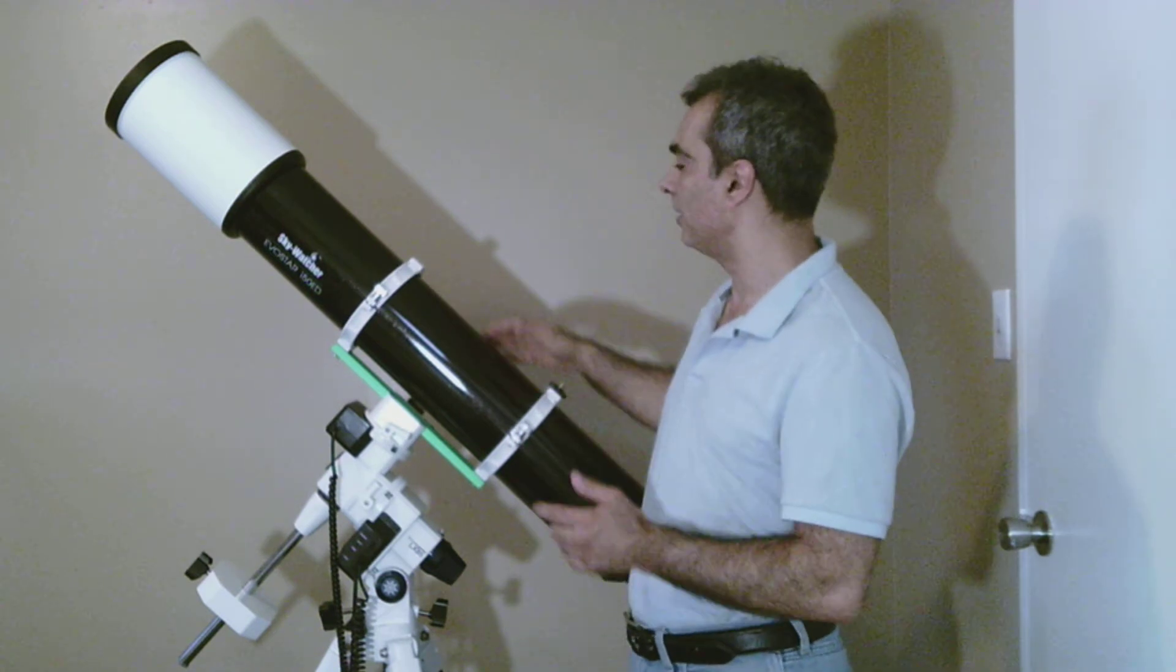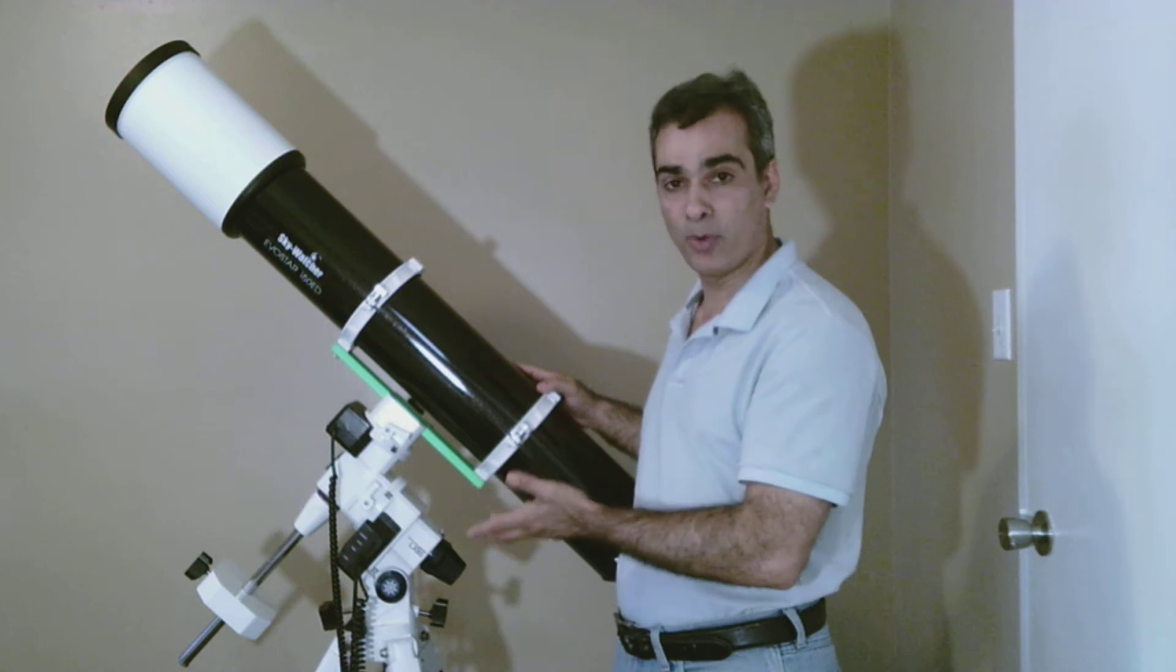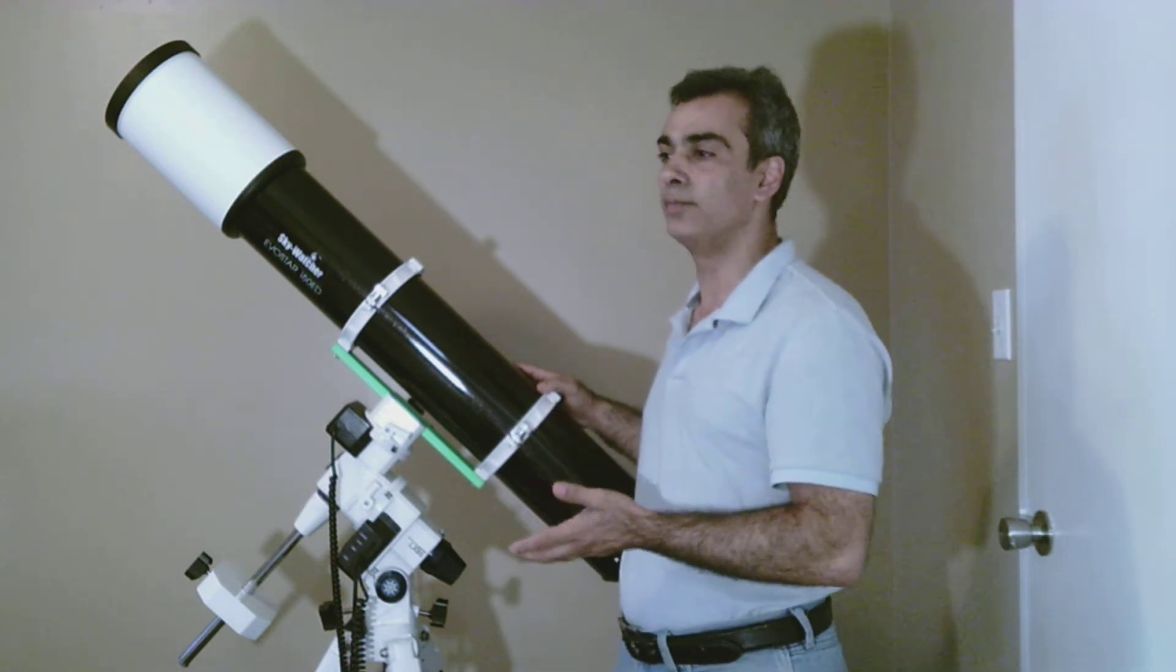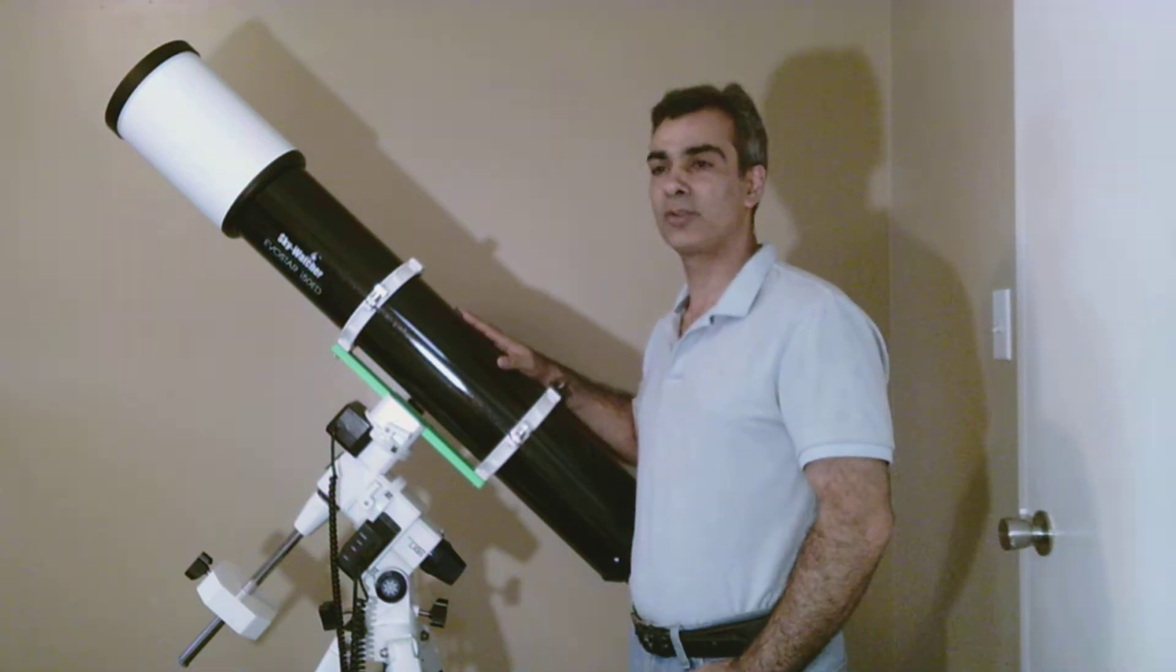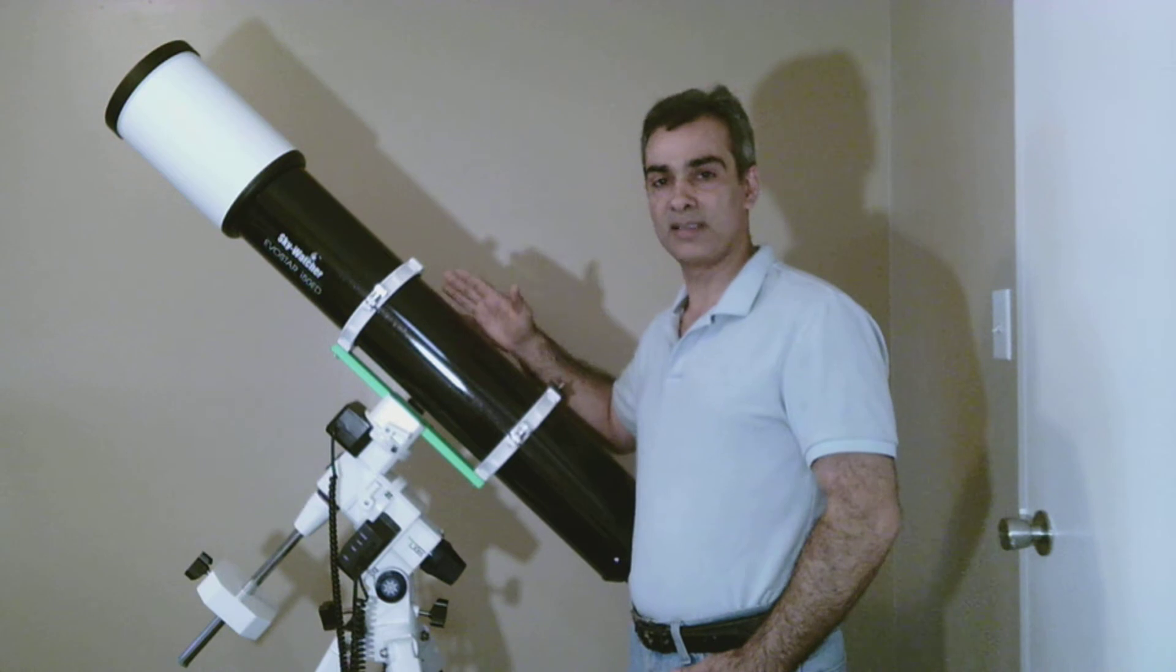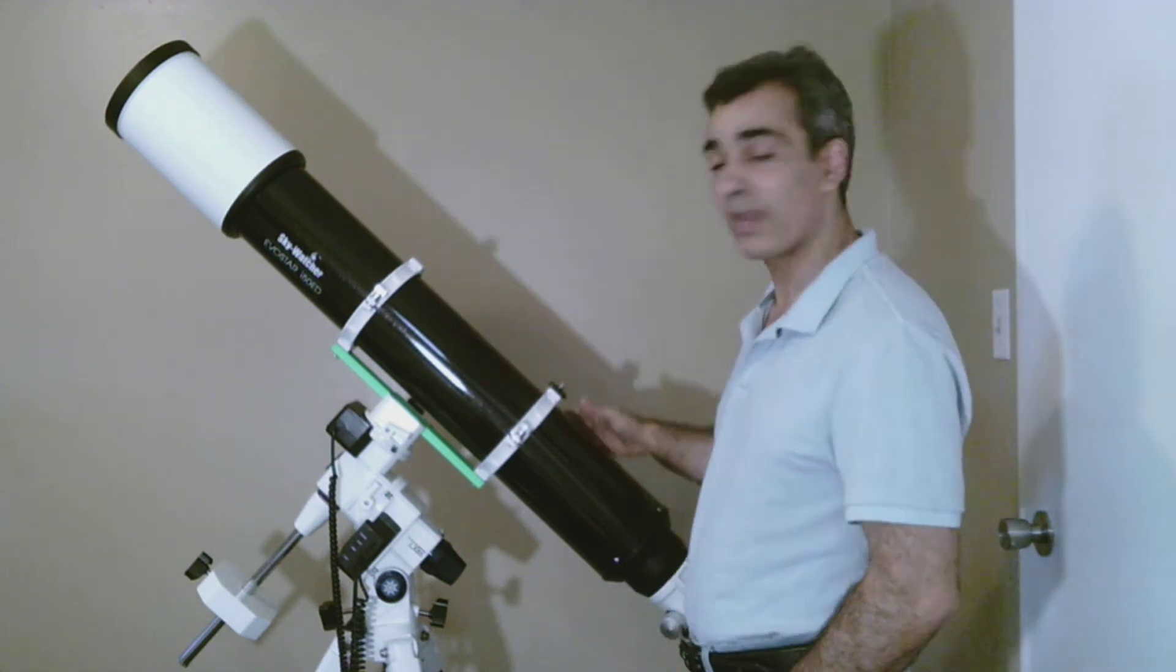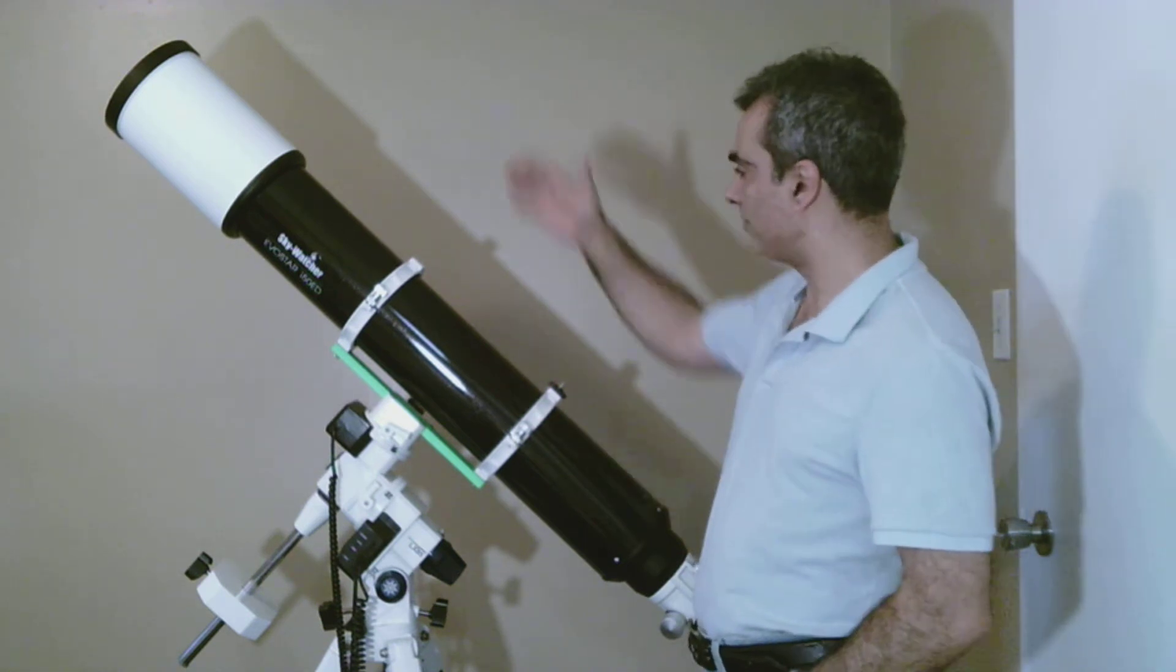So a lot of people were asking for any company to make something like a 6 inch ED, or Apo, that was entry level, or at least not so expensive. So Skywatcher answered that call within this last year. They came out with this one. So this is a 6 inch F8, Apochromatic Refractor.